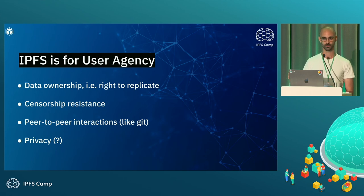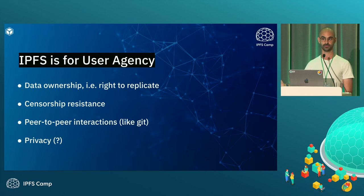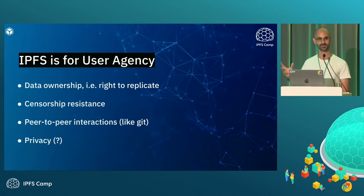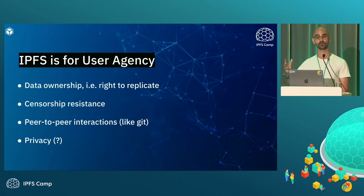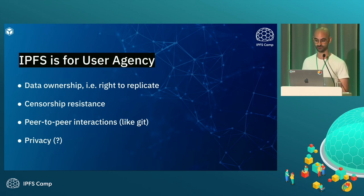The first is data ownership. When you have a CID and a provider for it, you have the right to replicate — IPFS really enshrines that right to replicate. One of the biggest misconceptions in IPFS is that if you have a CID, you can magically retrieve it through the network, but really you need servers and someone actually providing it. The second is censorship resistance: once you have multi-source retrieval, it becomes a lot harder to censor, and you can do peer-to-peer interactions, which has a lot of power.